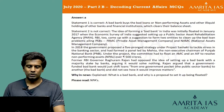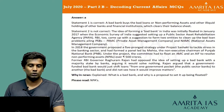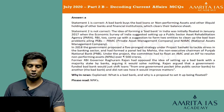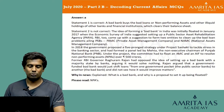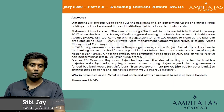The answer is A. Statement 1 is correct — a bad bank buys bad loans or NPAs and other illiquid holdings of other banks and financial institutions to clear their balance sheet. Statement 2 is not correct because the idea of forming a bad bank was initially floated in January 2017 when the Economic Survey of India suggested setting up a public sector asset rehabilitation agency (PARA). The RBI also suggested forming two entities: the Private Asset Management Company (PAMC) and the National Asset Management Company (NAMC). In 2018, the government proposed a five-pronged strategy under Project Sashakt led by a panel headed by the non-executive chairman of Punjab National Bank.